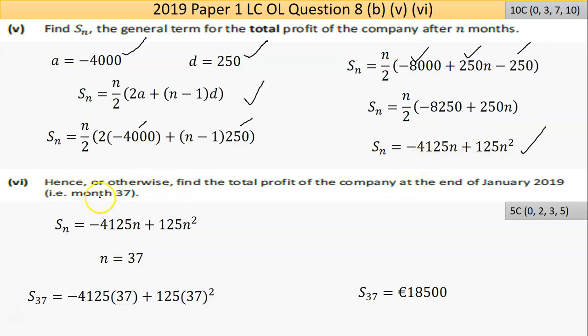Now part 6 here says, hence otherwise find the total profit of the company at the end of January 2019, at the end of month 37. So I have my formula. I've been told one of the two unknowns, so 37. So straightforward, it's like part 3. Put my n in instead of there, pull it through the calculator, and I end up with €18,500.